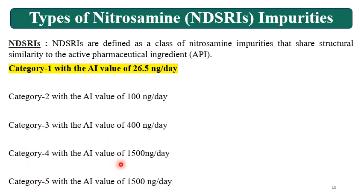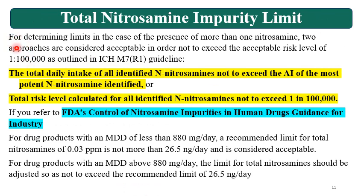For determining limits when more than one Nitrosamine is present, two approaches are considered acceptable in order not to exceed the acceptable risk level of 1 in 100,000 species as outlined in ICH M7. Whatever the number of Nitrosamines present — 2, 3, or 4 — you cannot assign limits that exceed the 1-in-100,000 principle. This is very important to understand.